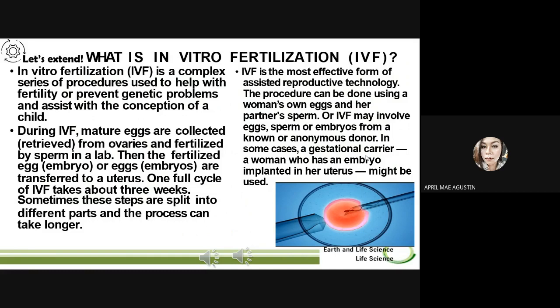IVF is the most effective form of assisted reproductive technology. The procedure can be done using a woman's own eggs and her partner's sperm. Or IVF may involve eggs, sperm, or embryos from a known or anonymous donor. In some cases, a gestational carrier — a woman who has an embryo implanted in her uterus — might be used.